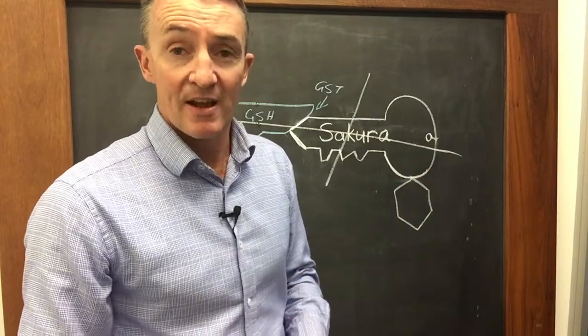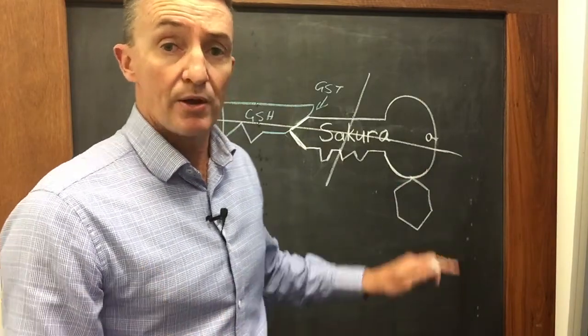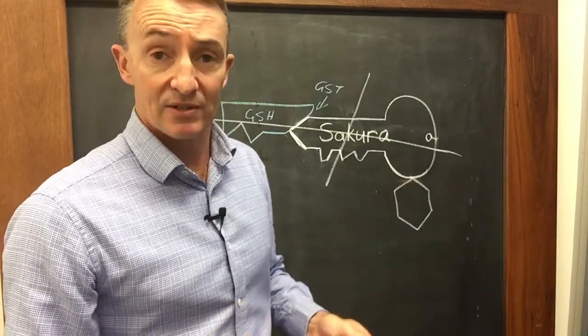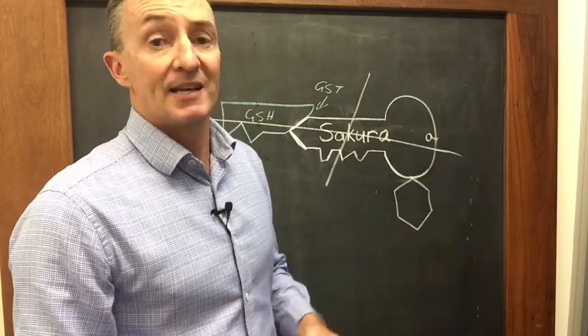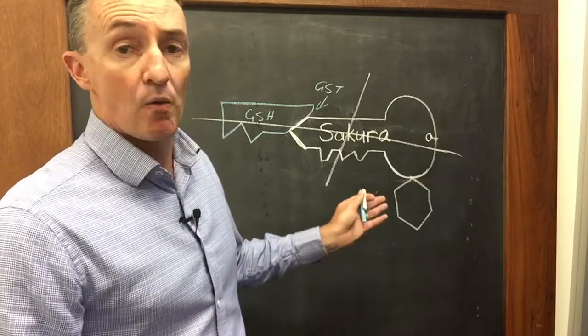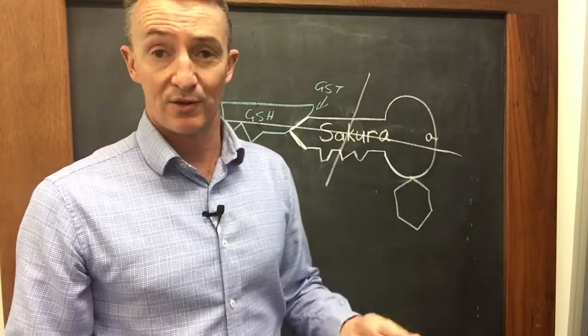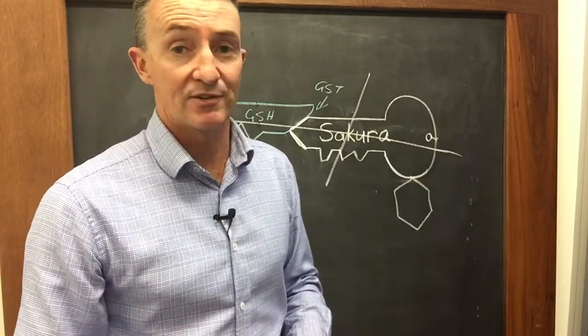Now interestingly, the researchers from Kumii, who are the chemical company that discovered Sakura and have done a lot of research on it, they found that wheat does exactly the same thing. This is how wheat tolerates Sakura. So really interesting story.